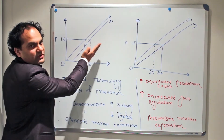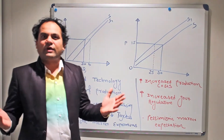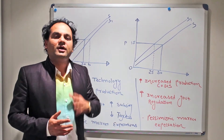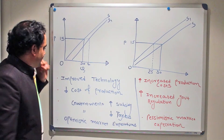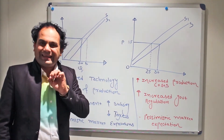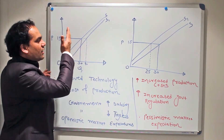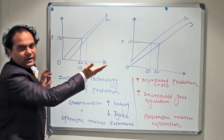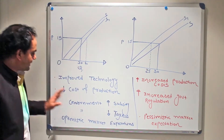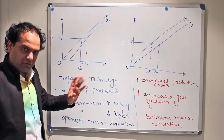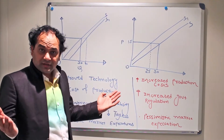Second: cost of production goes down. This is a favorable scenario that will also move the supply curve to its right. There are four factors of production — entrepreneurship, land, labor, and capital. If the cost of production decreases, we will be able to produce more units, and that will move our supply curve to its right. We will be able to produce more units at the same given price.